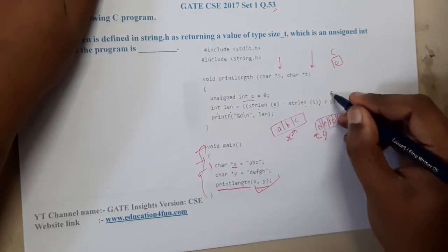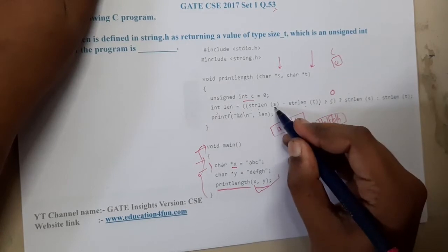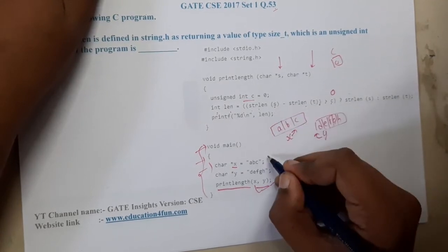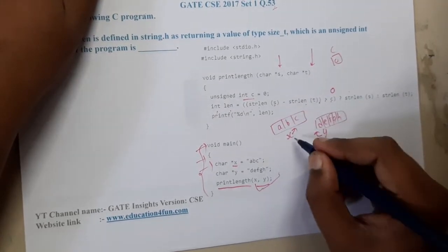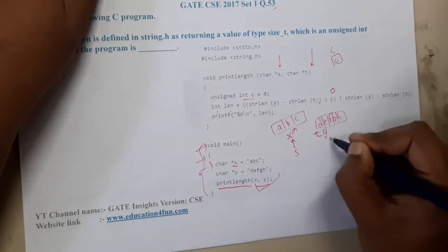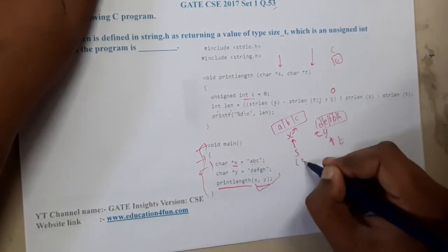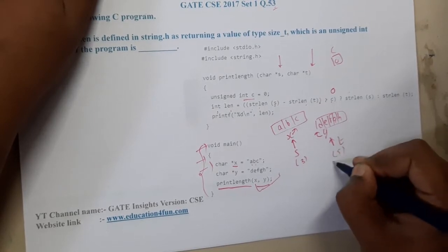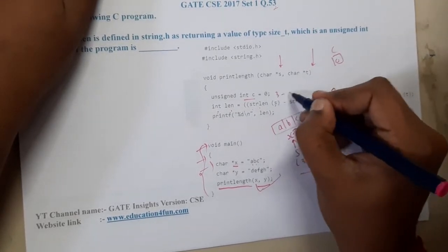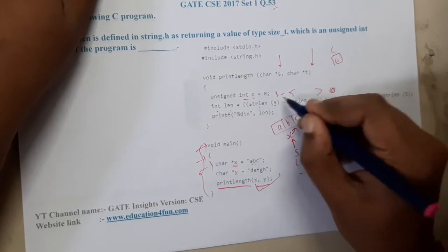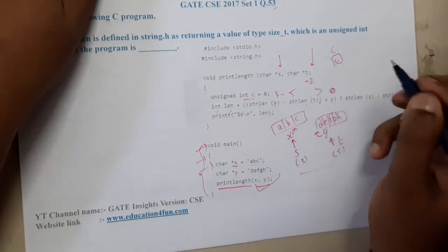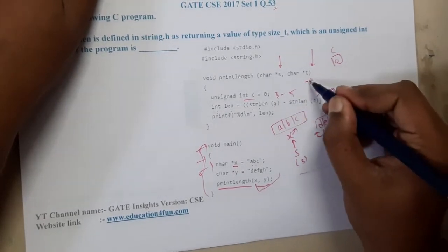What is the value of c? It is zero. What is the value of strlen of s? This is nothing but s and this is nothing but t. What is the length of s, which is three? What is the length of t? It is five. So what we are doing: three minus five is greater than zero. The result is minus two.